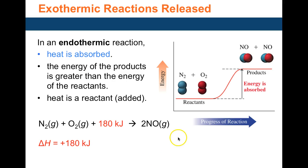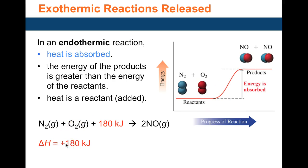In an endothermic reaction, heat is supplied to break bonds between nitrogen and oxygen molecules. When they reform, all that energy is absorbed and kept within the molecule — nothing is released. Therefore, the product energy is higher than that of the reactants, giving a positive delta H. Energy is included on the reactant side as one of the reactants.